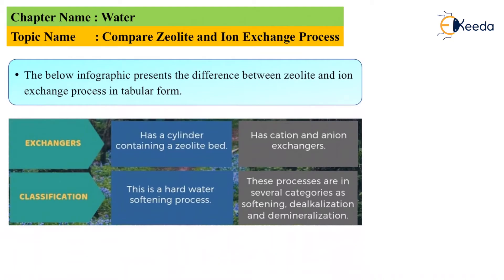Furthermore, regarding the exchangers: the zeolite process uses a cylinder containing a zeolite bed, whereas the ion exchange process uses cation and anion exchangers. The hard water gets softened, hence it is classified as a hard water softening process. Under classification, the ion exchange process covers several categories like softening of water, dealkalization, and demineralization. These are the basic differences between the zeolite and the ion exchange process.